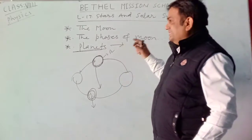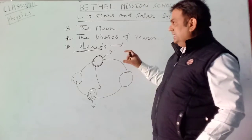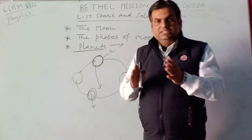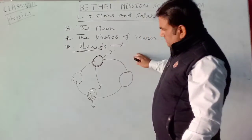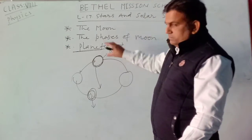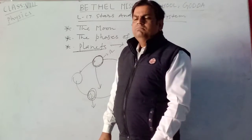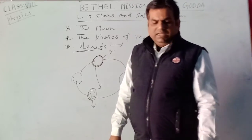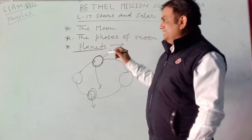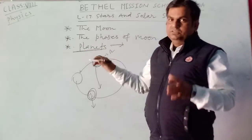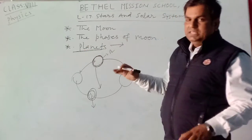The remaining four planets — Jupiter, Saturn, Uranus, and Neptune — are known as Jovian planets.